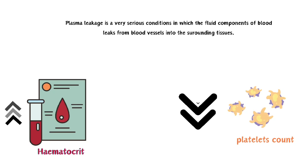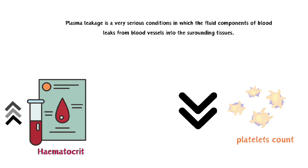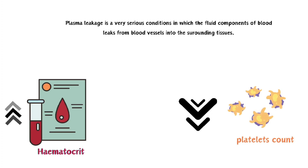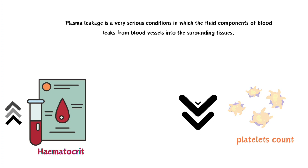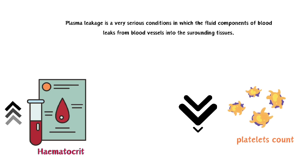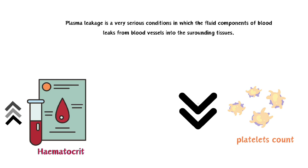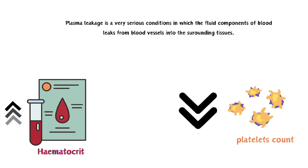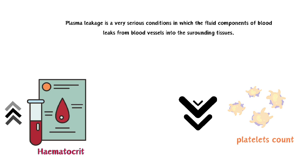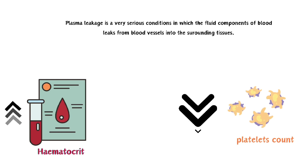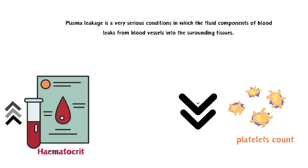When the vascular integrity is altered, the volume of red blood cells rises, increasing the hematocrit levels, and there is a decrease in platelet count as they get involved in maintaining vascular integrity.